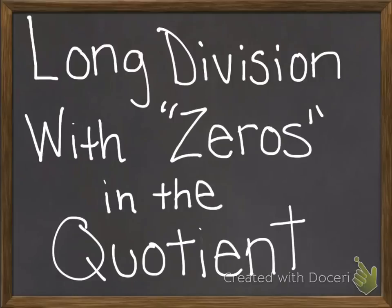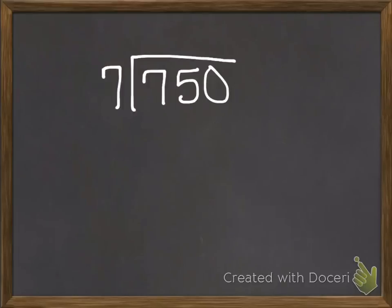So let's get started with our first problem. This problem states 750 divided by 7. Remember that 750 is called the dividend, and the 7 is your divisor. So right now I'm going to look at the first number in my dividend, which is a 7.